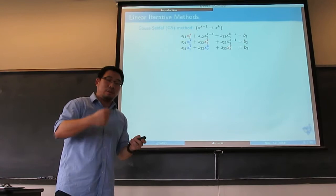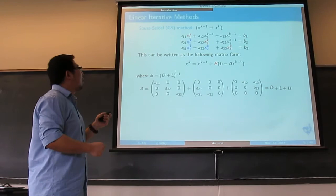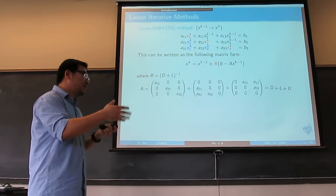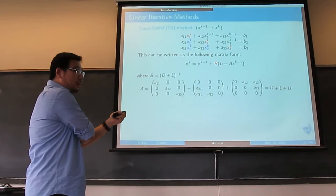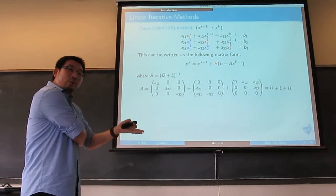Then you get all the new iteration x_k and can continue computing x_{k+1}. This can be written in matrix form: x_k equals x_{k-1} plus B times (b minus A x_{k-1}). For Gauss-Seidel, this B is (D + L) inverse, where you decompose A into three parts: diagonal, strict lower triangular, and strict upper triangular. For Gauss-Seidel, you use D plus L, the lower triangular part of the matrix.